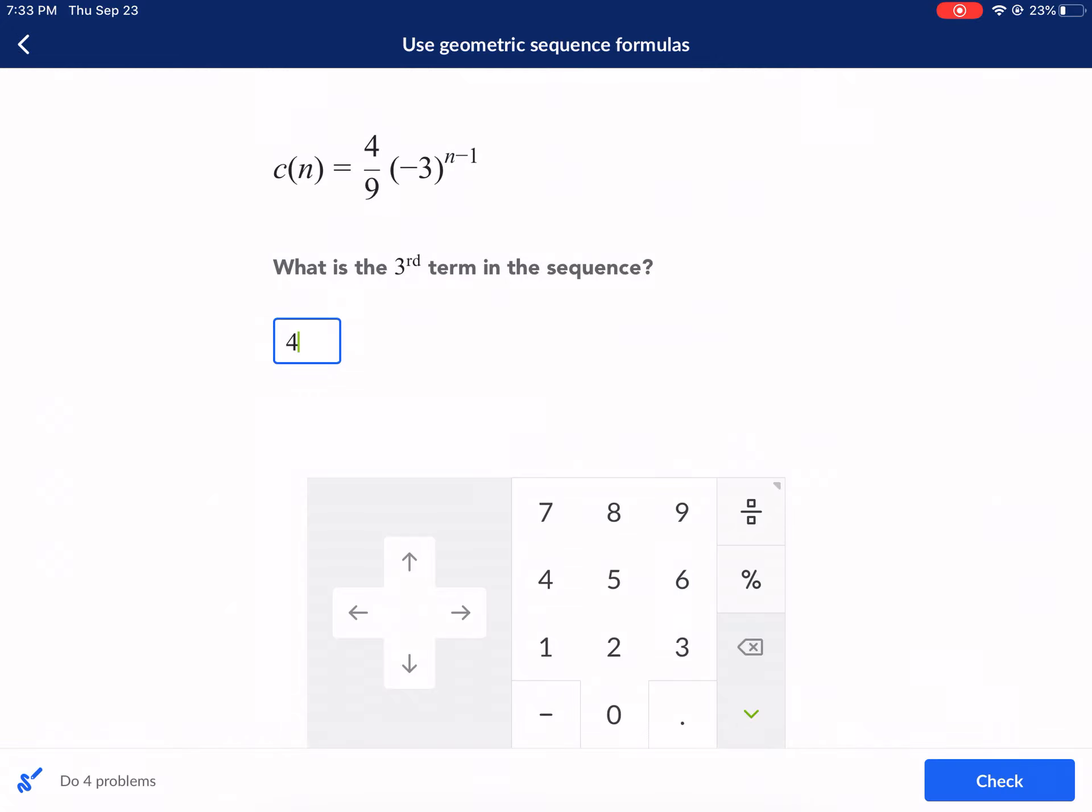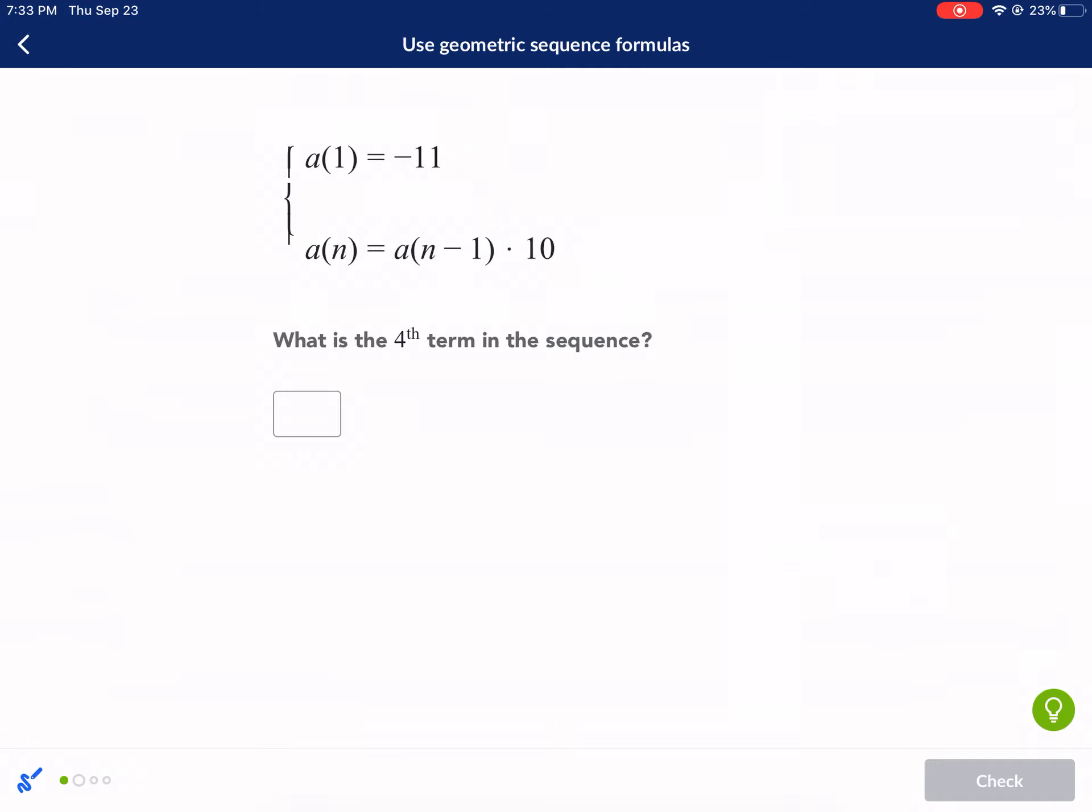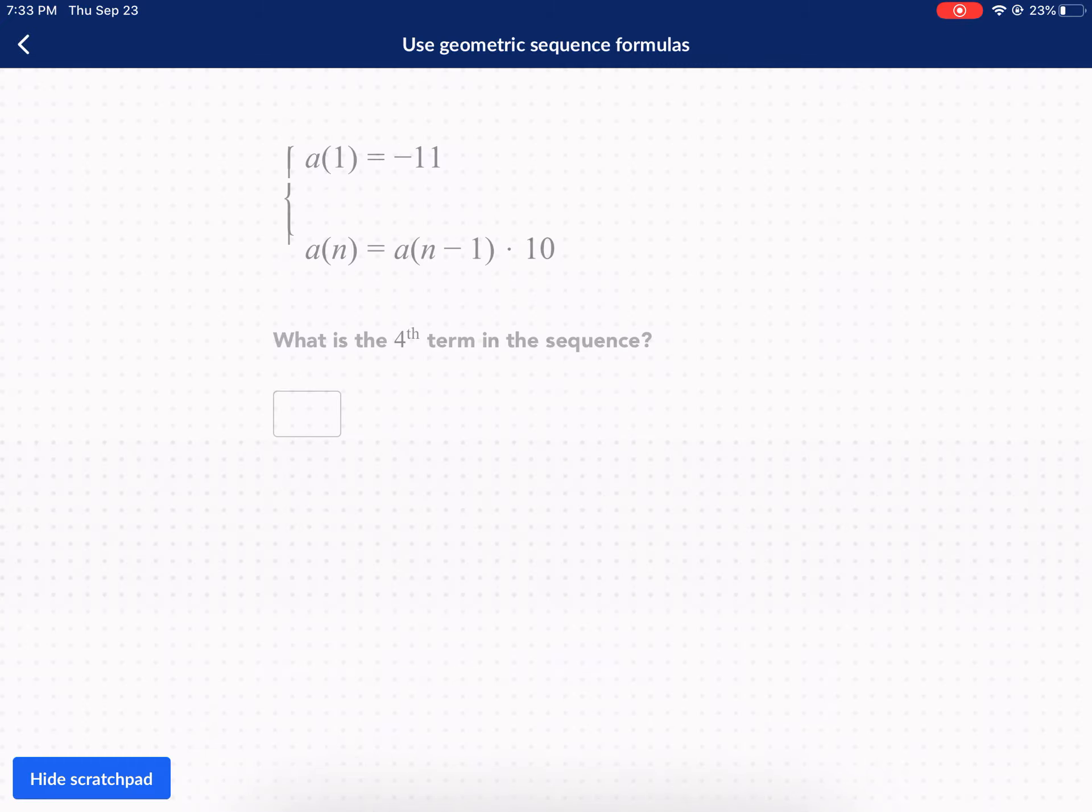So the third term in that sequence is the number four. c(3) equals four. We're going to punch that in and we're going to move on. My first hour requested this video. Hopefully they find it helpful. I know you guys are at home during these weird times, but here we go.